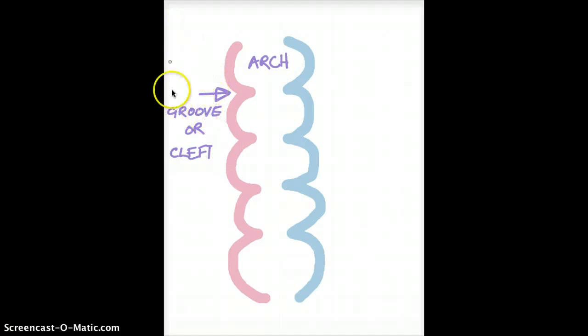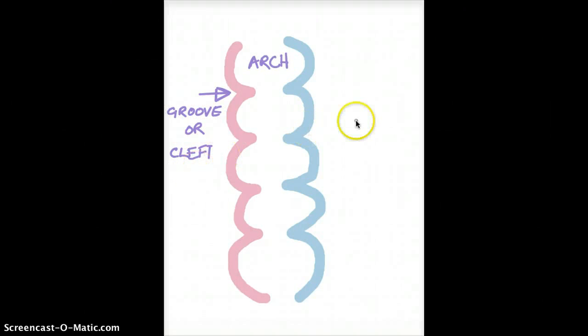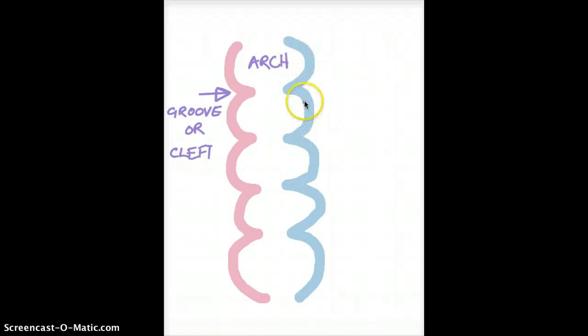And you can either call them pharyngeal groove or pharyngeal cleft or brachial groove or brachial cleft. When we look from the endoderm side, this invagination is called a pouch.